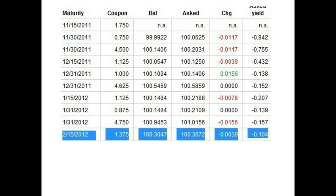The last column, labeled Asked Yield, is the bond's yield to maturity based on the ask price.